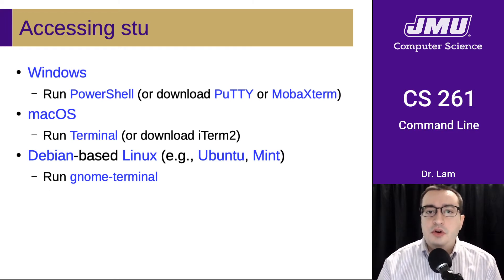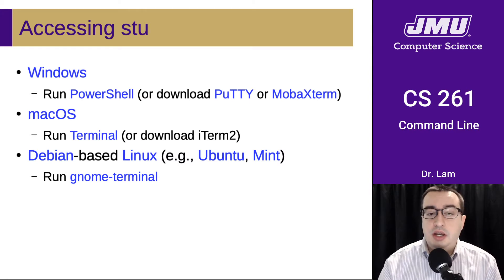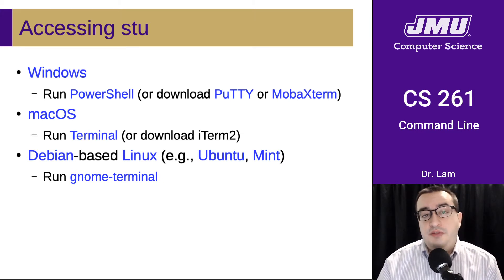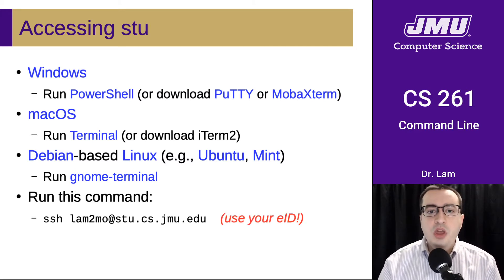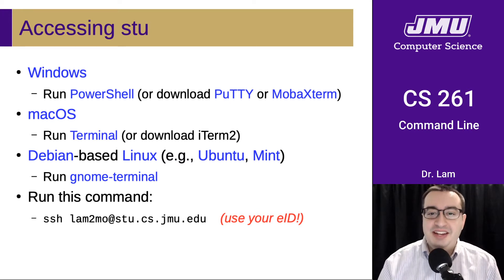Accessing the student server will look a little different depending on the operating system of your computer. On Windows, I recommend using PowerShell or downloading a separate terminal program — either PuTTY or MobaXterm. On Mac, you can use the built-in terminal, or I prefer a program called iTerm2. If you have Linux on your personal computer, you most assuredly have a terminal built in — for Debian-based distributions like Ubuntu or Mint, you'll want to use GNOME Terminal. Once you have a command line on your local machine, you can connect to STU using an SSH client by running: SSH your-EID@stu.cs.jmu.edu — make sure to replace my EID with your own.